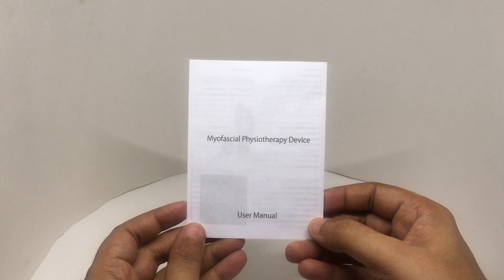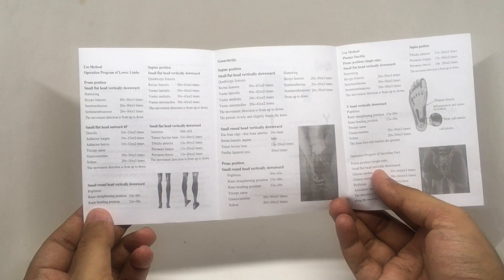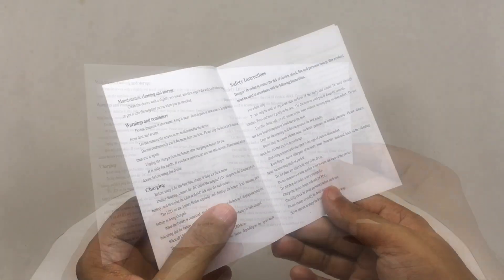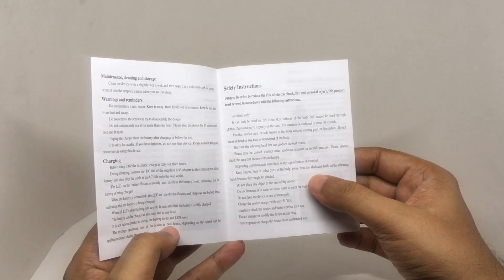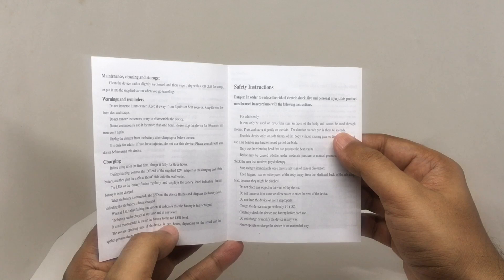You get a user manual. They recommend not doing more than 45 seconds per area. Even though the battery lasts for two hours, you only use on each area for less than one minute.